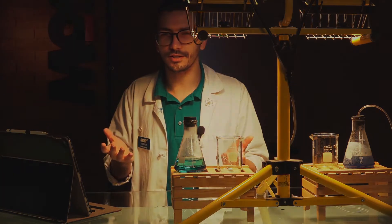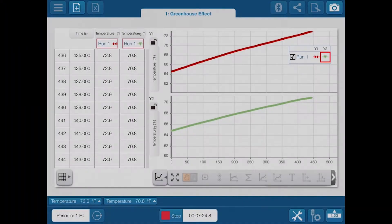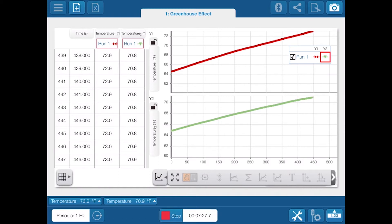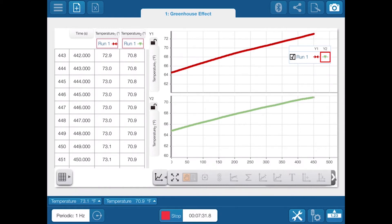Now, let's take a look at the temperatures. So it looks like the Erlenmeyer flask with the oxygen has about 71.1, yeah, around 71.1 degrees.